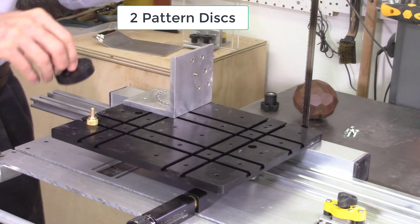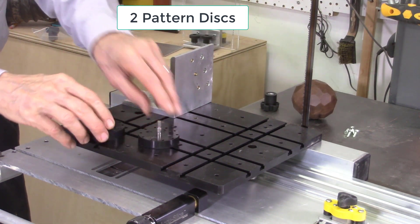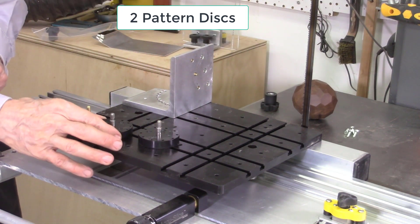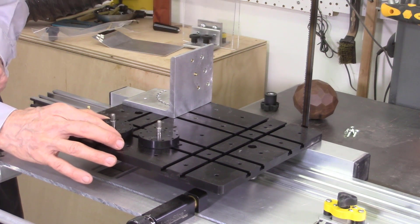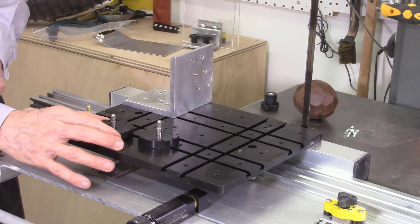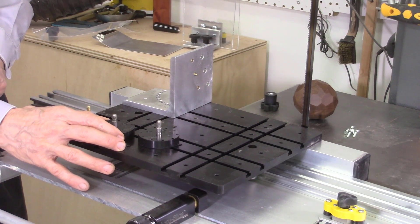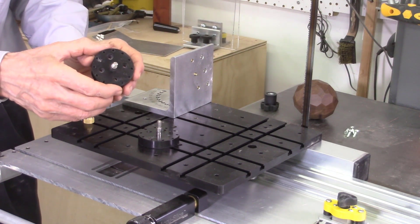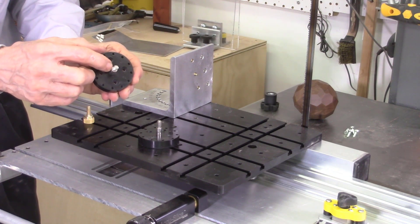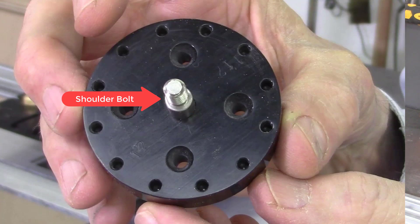Included with the AccuFacet system are two pattern discs. One disc is designed for 10-sided faceting cuts and the second disc is used for 12-sided faceting cuts. Additional pattern discs are also available. In the center of each pattern disc is a stainless steel shoulder bolt which has been fixed to the pattern disc. On the pattern disc are a set of 10 or 12 small indexing holes which will align the auto-indexing pins on the L-bracket support plate.